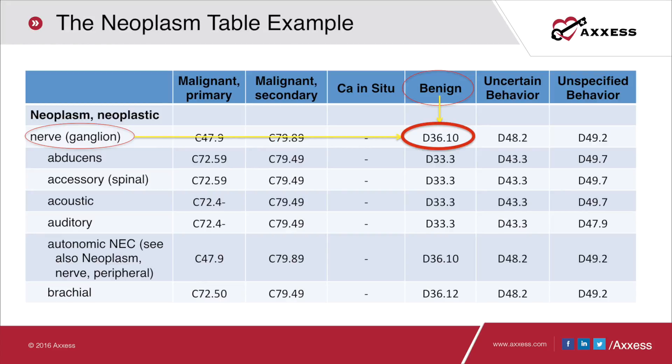Looking at the neoplasm table for nerve in the benign column, where those two intersect you have code D36.10. Once you have that, jot it down and flip over to the tabular section to D36.10. Look for guidance at the chapter level, the chapter block level, the three-character category D36, and then the final code D36.10, checking for any guidance on sequencing and other requirements.